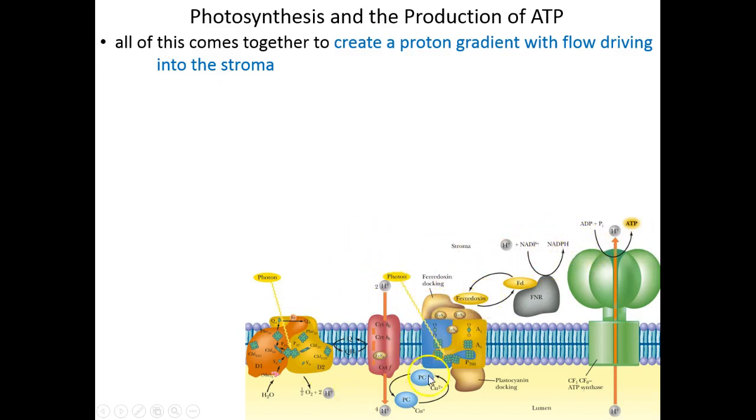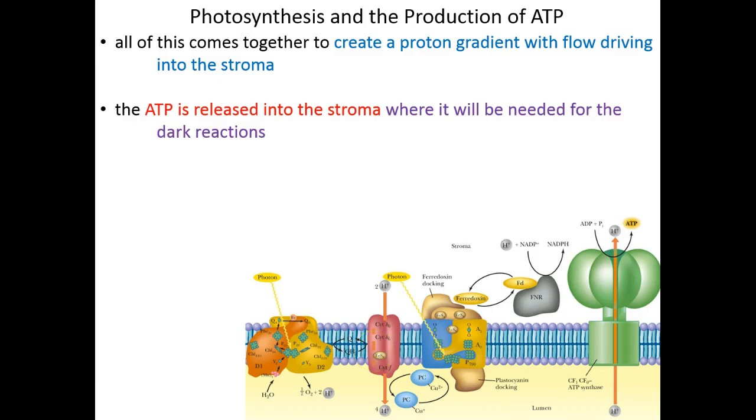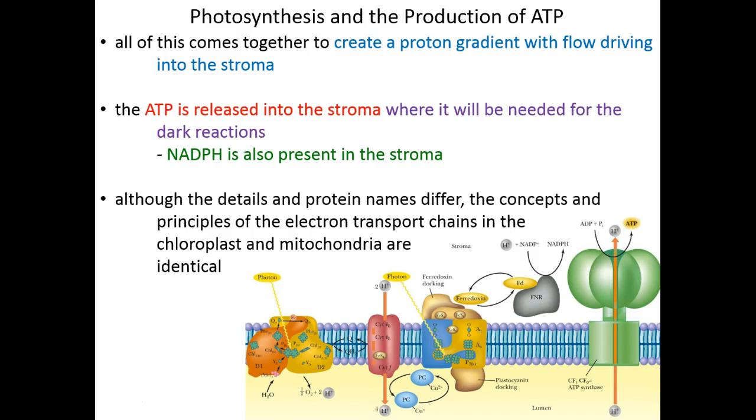Photosystem 1 will work independently to pump protons exclusively. The ATP that's generated when those protons flow through this ATP synthase-like enzyme is the ATP that we will need for the dark reactions, the ATP that will combine with NADPH in order to drive the carbon fixation process. Remember, we left NADPH in the stroma, we're leaving ATP in the stroma here as well, and it's both of those energy sources that will be used for the dark reactions.